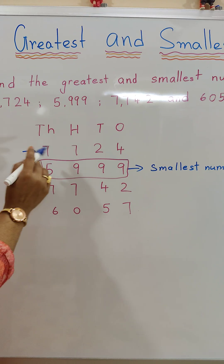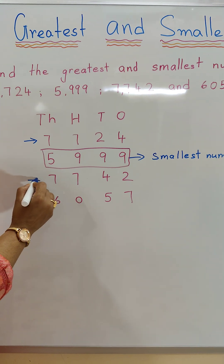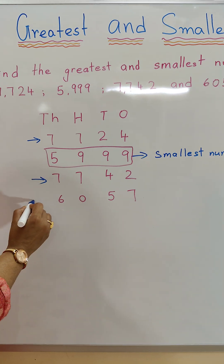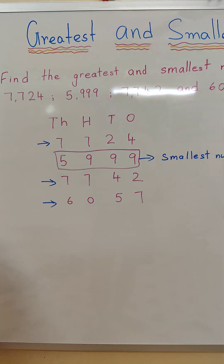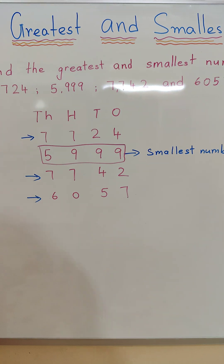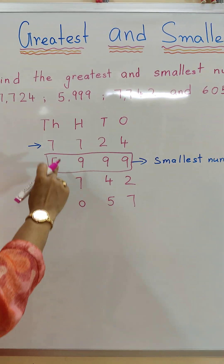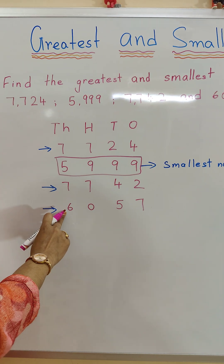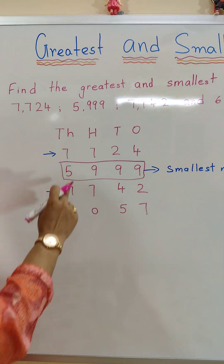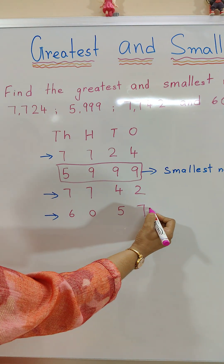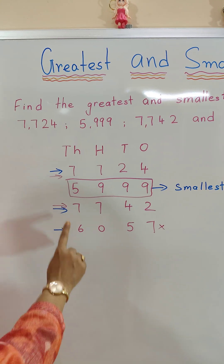As we found the smallest number, we remove 5999. The remaining numbers are 7724, 7742, and 6057. In the thousands place, we have 7, 7, and 6. Since 6 is the smallest among these three, we cancel 6057.